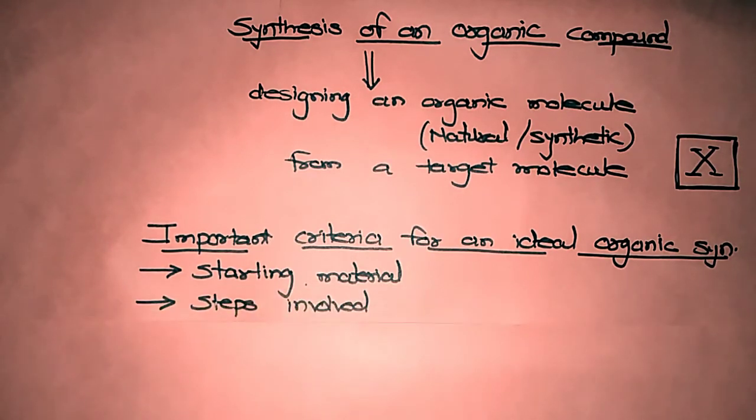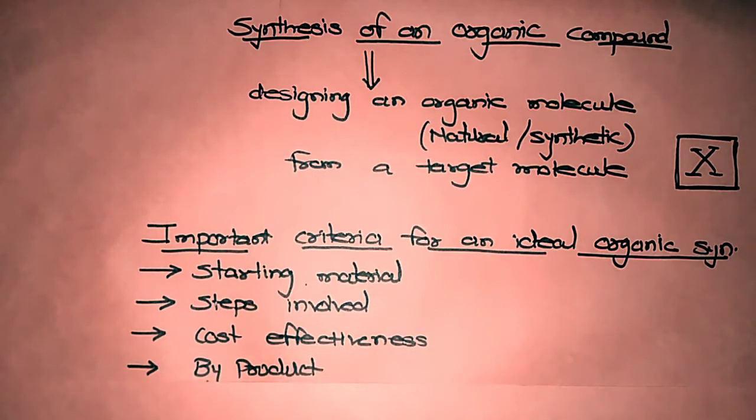Second criteria is steps involved. The number of steps involved should be very less, as the number of steps increases the efficiency of product goes on decreasing. Third is cost effectiveness. It should be cost effective with respect to chemical substances used in the operational procedures. And last, about by-product. The reaction should give minimum by-product which in turn reduces the efficiency of the reaction. If more amount of by-product is formed, then yield of the reaction goes on decreasing.